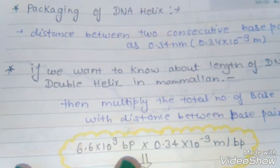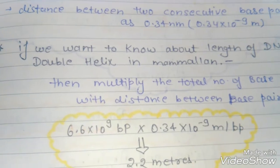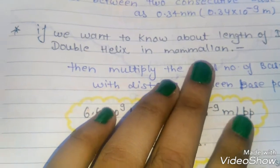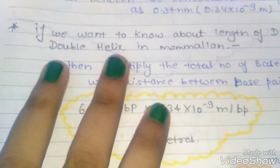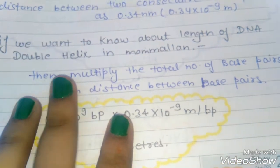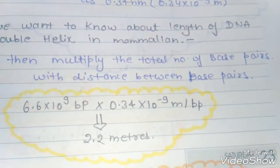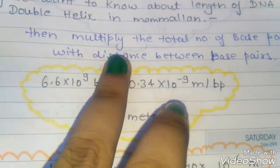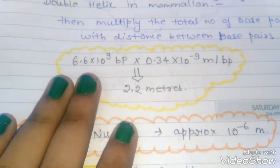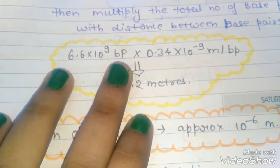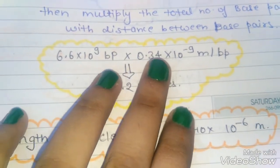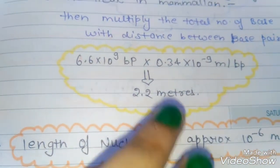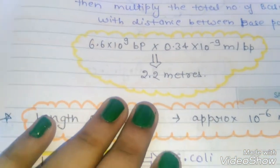Next we will talk about the length of DNA. In mammalian cells, DNA exists as a double helix. To find the length of DNA, we multiply the total number of base pairs by the distance between those bases. So: 6.6 × 10⁹ base pairs × 0.34 × 10⁻⁹ meter per base pair = 2.2 meters. That is the length of DNA in a mammalian cell.